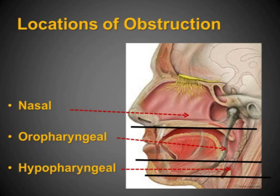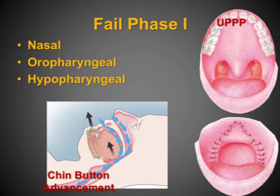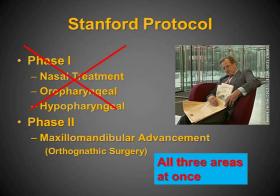These areas can be addressed with different types of operations. Typically, the Stanford protocol uses a phase 1 and a phase 2. Phase 1 treats the nose, the back of the throat, and tongue position through operations such as a septoplasty in the nose, a UPPP in the back of the throat, or a chin-button advancement to help with the hypopharynx. However, none of these fully address all areas at once, and the main problem of tongue position is not truly addressed, particularly when the lower jaw and mid-face are small. That's why phase 2, or maxillomandibular advancement, addresses all three.